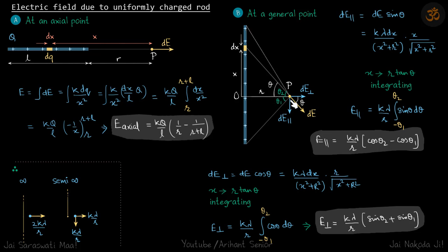So to calculate the field, again we will take a small element here at a distance x, dx width. And due to this element, small electric field will be dE. So we will break this dE into two components. So one is dE perpendicular because this is perpendicular to the rod and one is dE parallel, parallel to the rod. So we will find each of them individually. Let's start with E parallel.